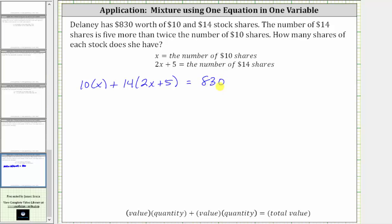And now we need to solve the equation for x. On the left, 10 times x is equal to 10x, and then we distribute 14 here. 14 times 2x gives us plus 28x, and then 14 times 5 is equal to 70, giving us plus 70, equals 830.